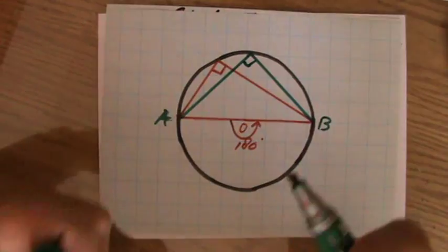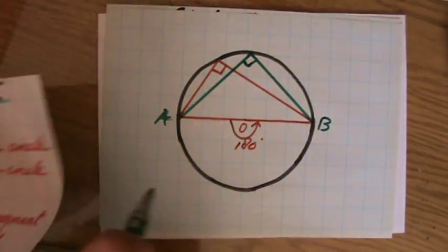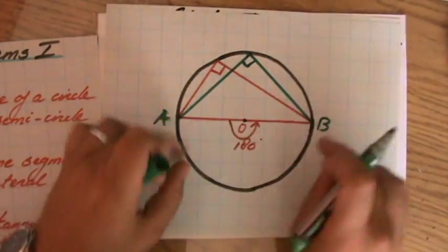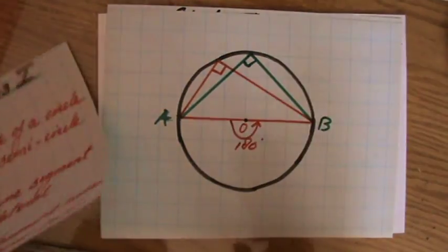Whenever they talk about the diameter in a circle, which is a radius in both directions, it's a straight line, talking about right-angle triangles.